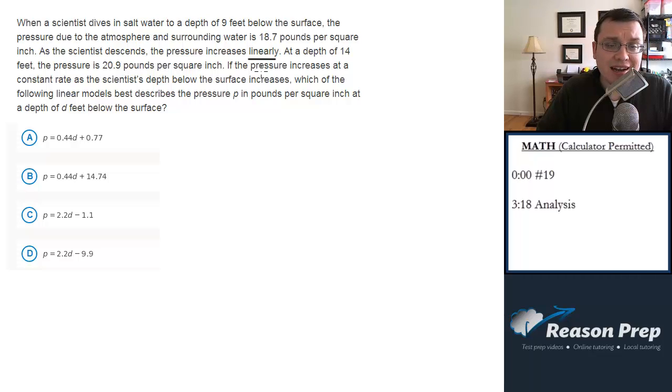If the pressure increases at a constant rate as a scientist's depth below the surface increases, which of the following linear models best describes the pressure p in pounds per square inch at a depth of d feet below the surface?